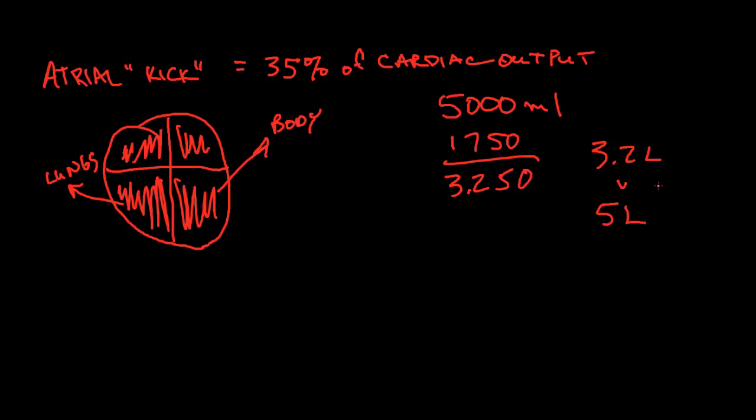So again, atrial kick comprises about 25% to 35% of the cardiac output. The older we get, the more it is a part of our cardiac output because as we get older, our ventricles become less able to push blood. So if they have more blood to push, that would be a good thing. And we'll find out more about that in the next video, which is called Starling's Law and is closely aligned with atrial kick.